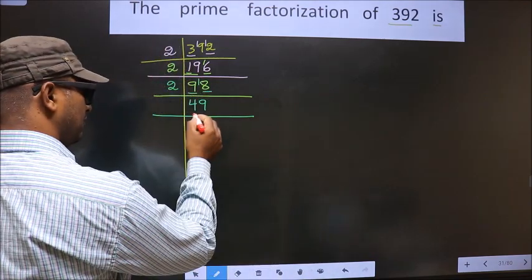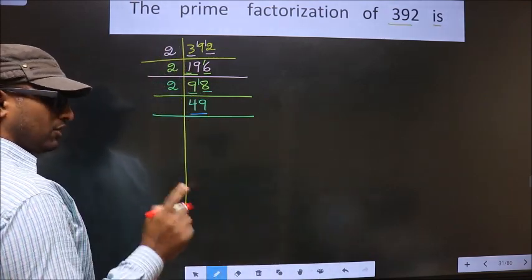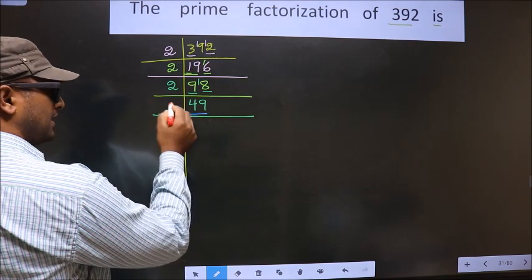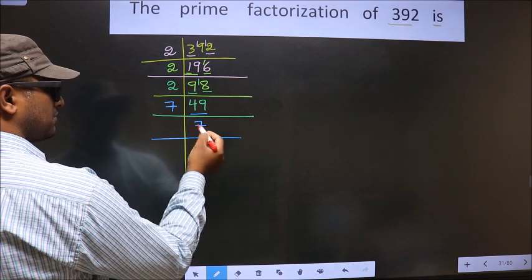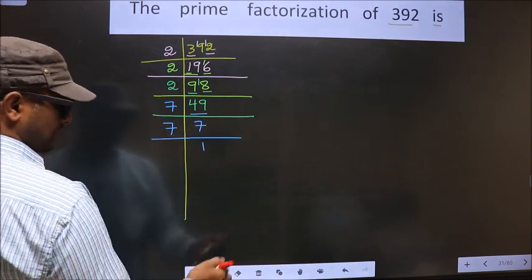Now, here we have 49. 49, you should remember. 49 is nothing but 7 7s 49. Now, 7 is a prime number. So we take 7 1s 7.